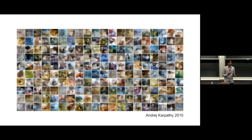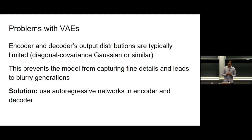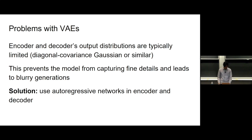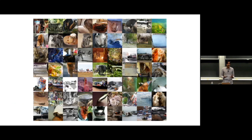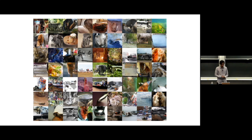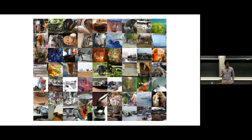The solution is to use autoregressive networks inside both the encoder and decoder of a VAE, giving very flexible density estimators for both encoding and decoding. This yields substantially more natural-looking images with a clear sense of global structure — many identifiable as natural scenes. This autoregressive variational autoencoder trained on ImageNet still struggles to generate plausible objects consistently, but it's a clear step improvement over either plain VAEs or pixel RNN models used alone.